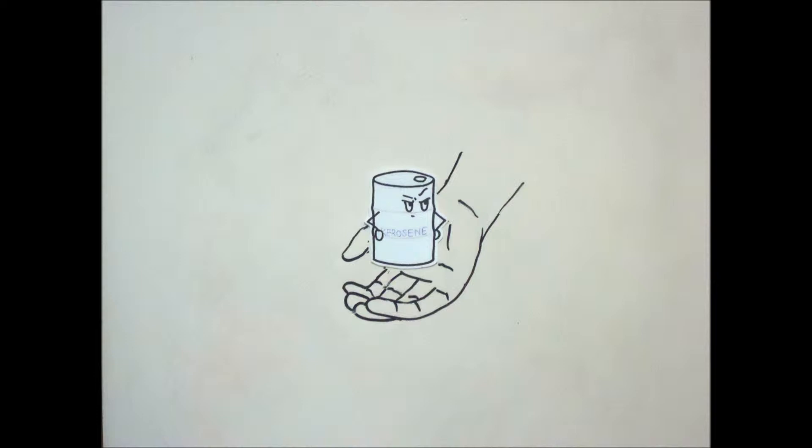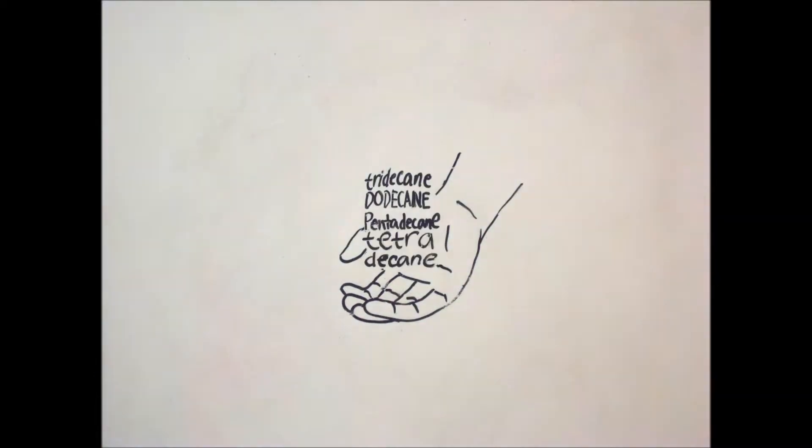Kerosene, on the other hand, is actually a mixture of 4 or more paraffin oils. Its major component is dodecane with a chemical formula C12H26.